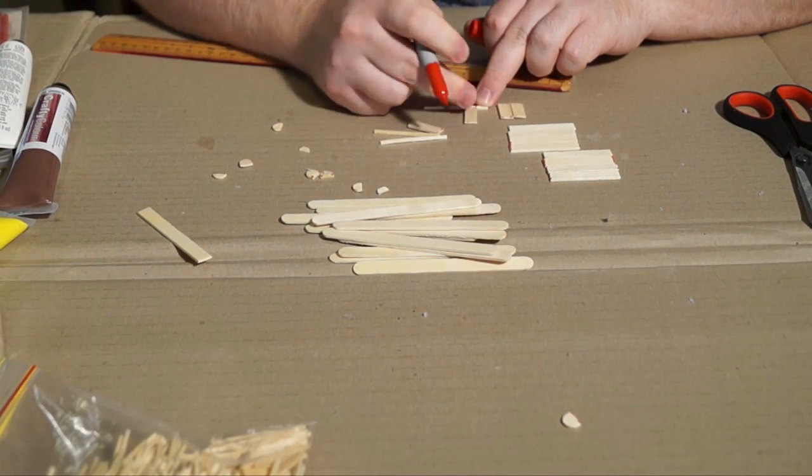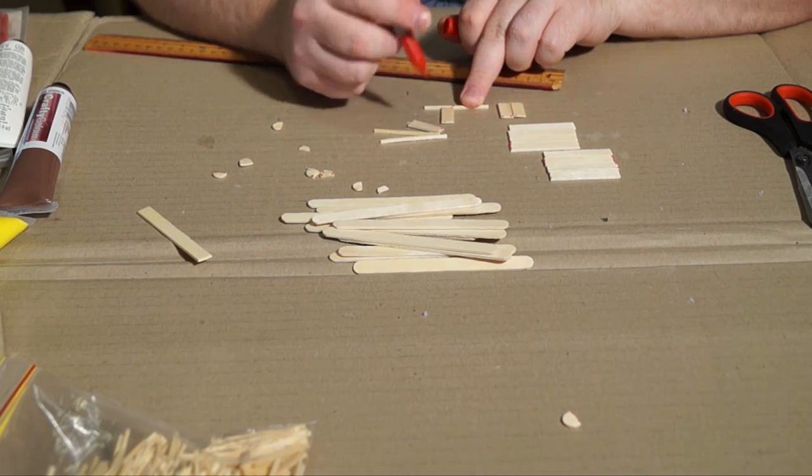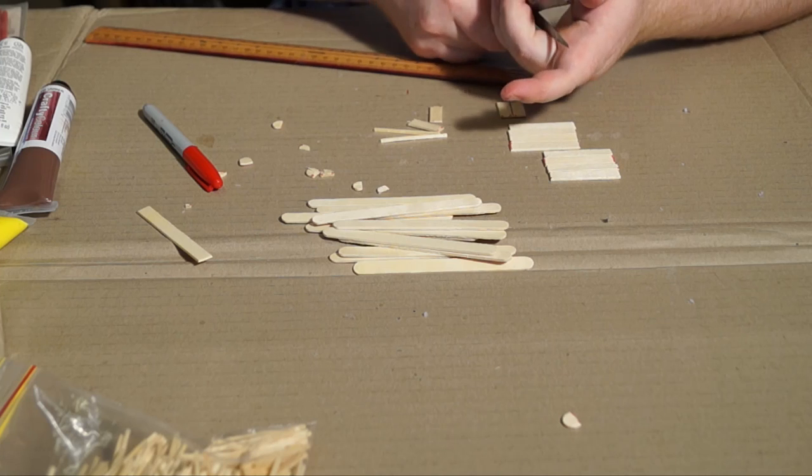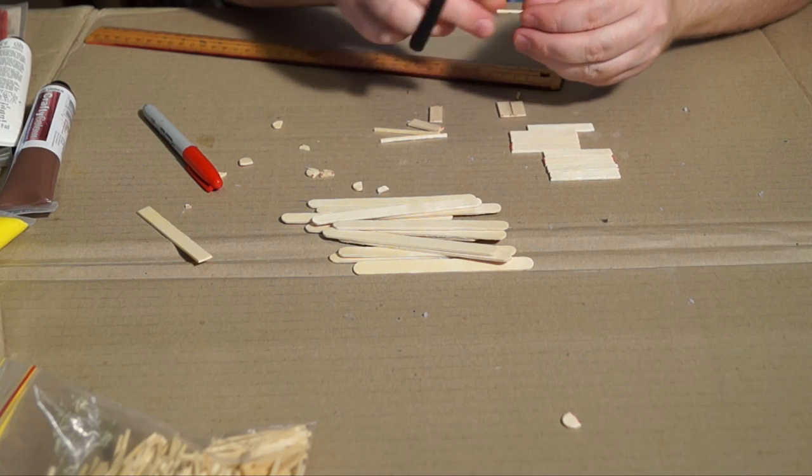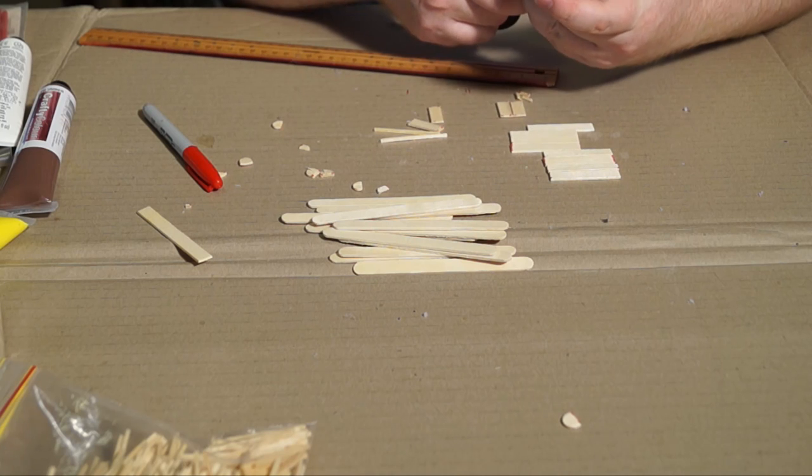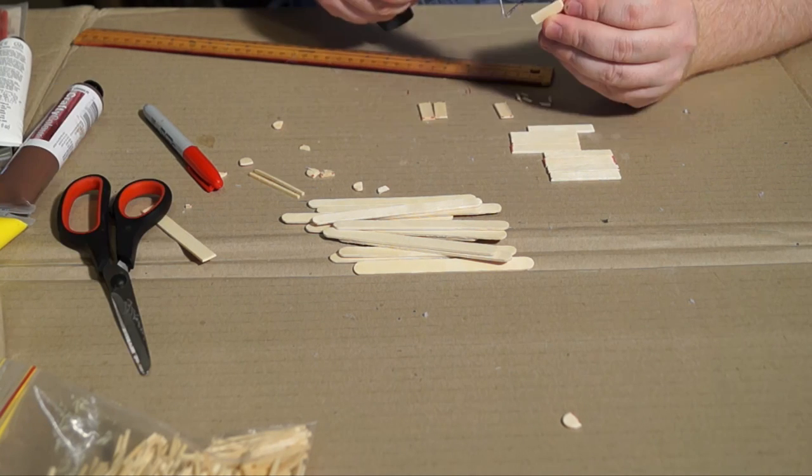Grab three matchsticks, two of them we're going to use later. The one we're just going to measure off the width of one of those foot pieces and we need four of those. We're just going to cut out those four pieces from the matchstick and wait to use those later.